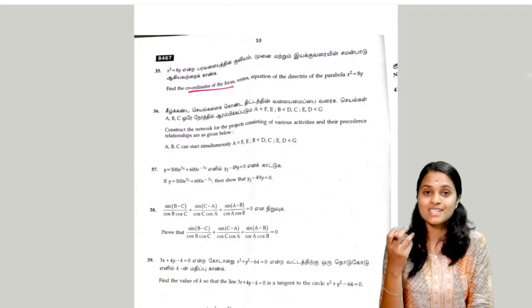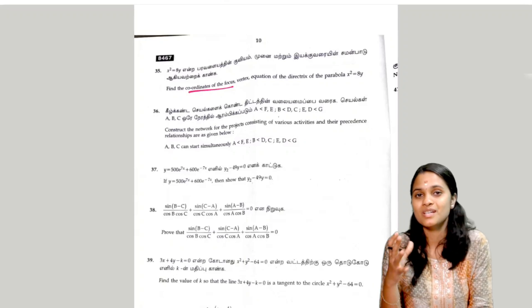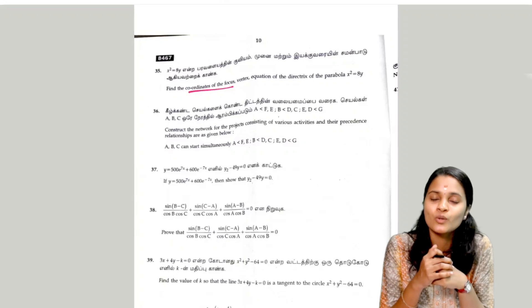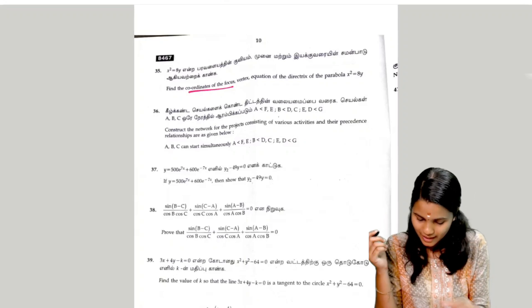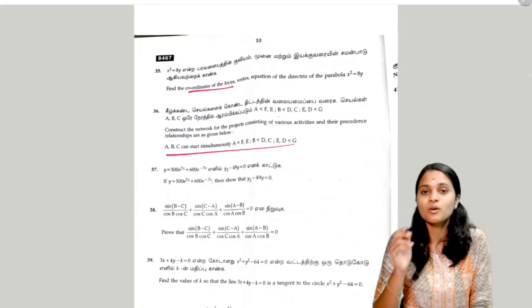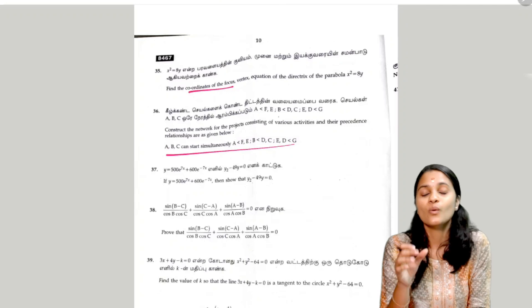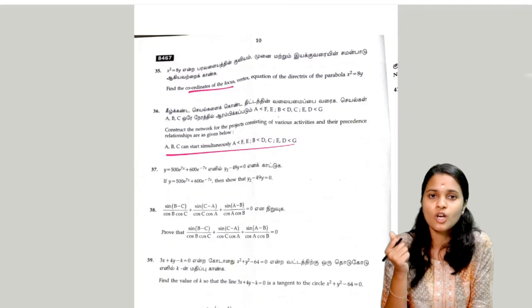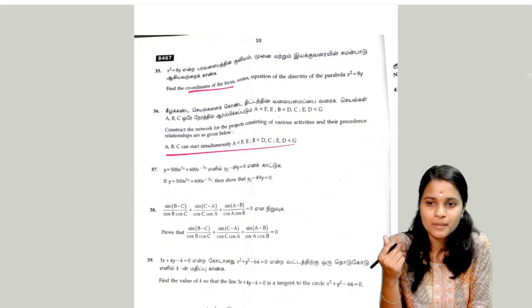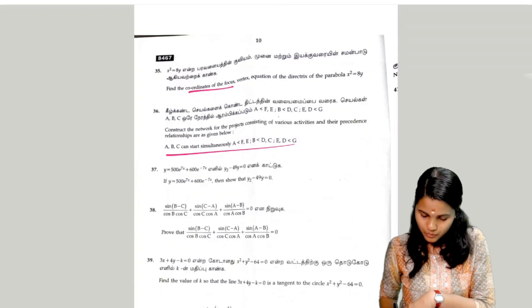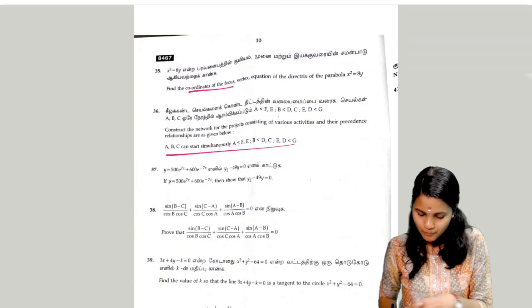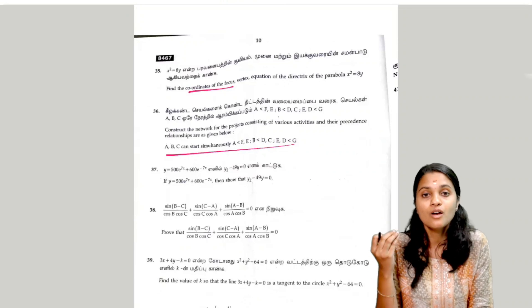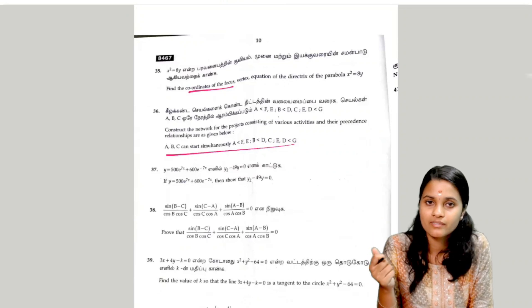The next two questions are from chapter 10 — we can work out the problems. The next question is the 37th: find the y value such that y² − 49y = 0. We have to prove it.